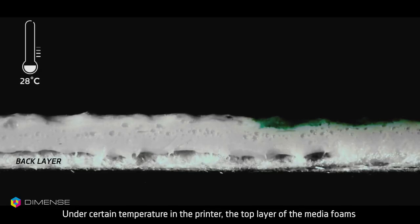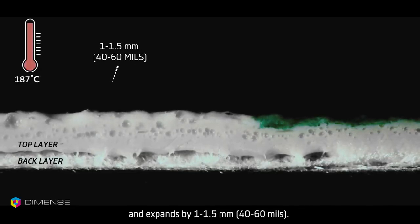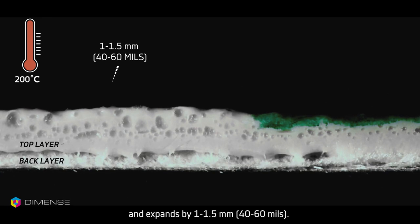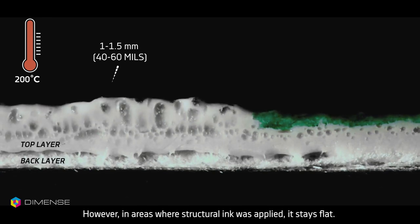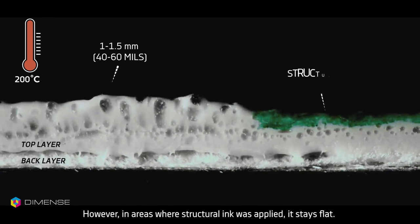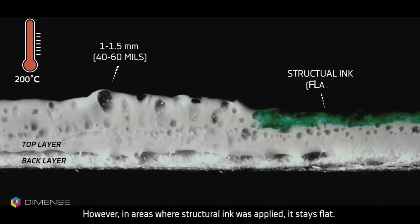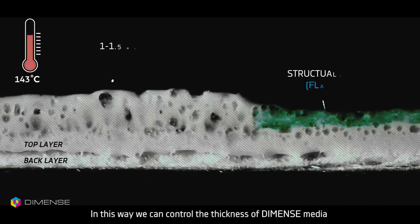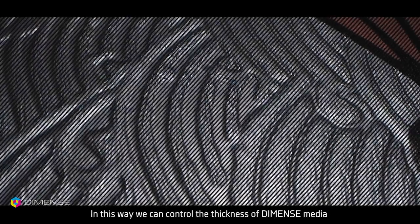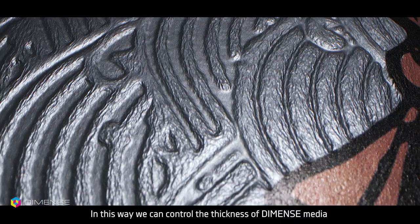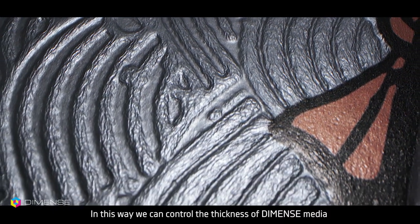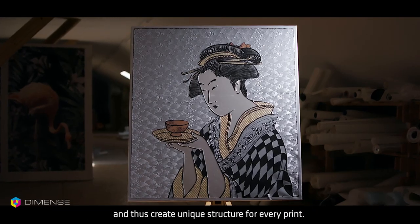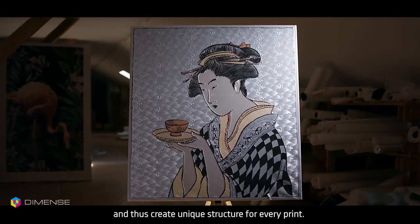Under certain temperature in the printer, the top layer of the media foams and expands by 1 to 1.5 mm. However, in areas where structural ink was applied, it stays flat. In this way, we can control the thickness of Dimens Media, and thus create a unique structure for every print.